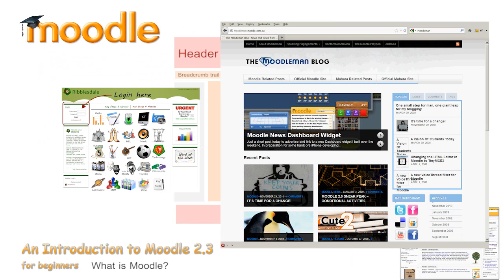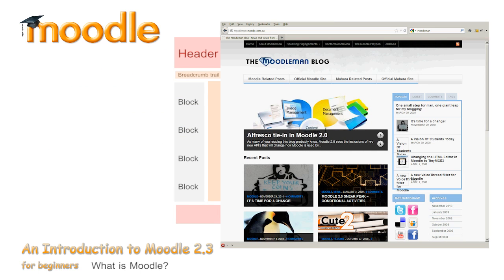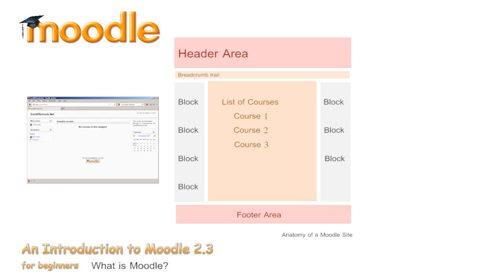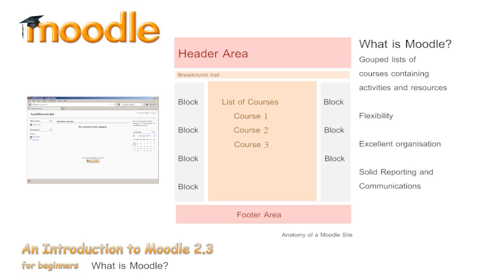Strip away all the hype and fancy front ends and you're left with a collection of managed lists and blocks. That is what we're going to do here in this course — strip Moodle down to its bare bones, so that you can see where the plethora of potentially confusing pages come from. We are going to use the vanilla, out-of-the-box Moodle and develop it into a full site. Everything will be so much easier once you can identify the component elements. You should then see that Moodle is a group list of activities and resources backed by excellent organisation with solid analysis and reporting functions.